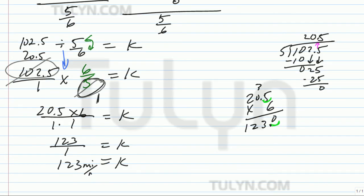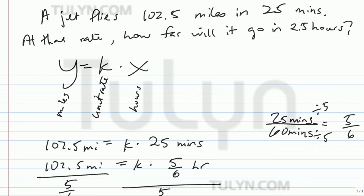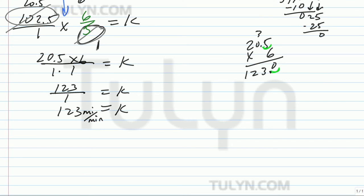So 123 over 1 times 1 is 1. K is 123 miles in a minute. Miles per minute, right? That's your unit rate. But it asks how, at that rate, how far will it go in 2.5 hours? So go ahead and plug it back into the formula. Y equals k times x.